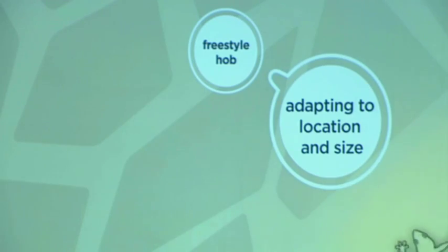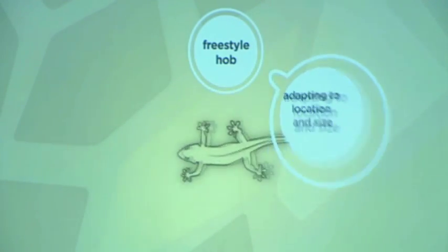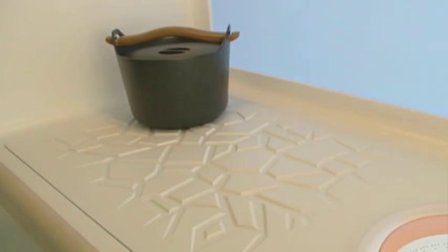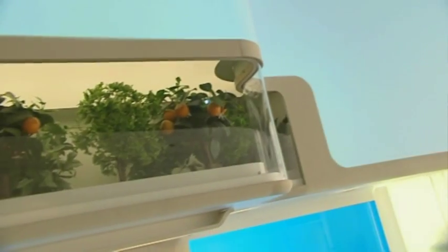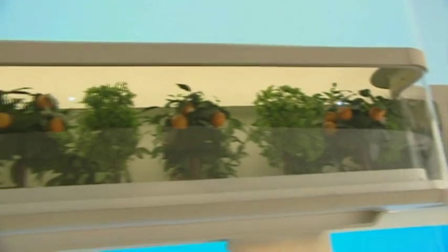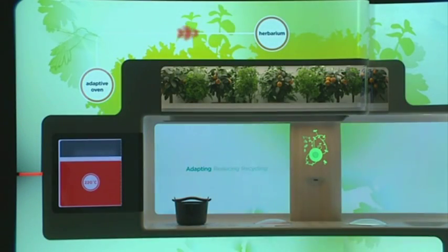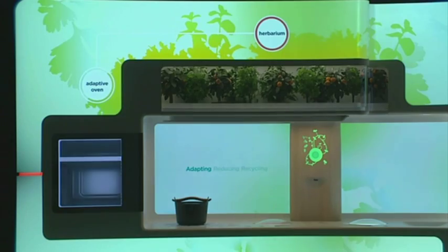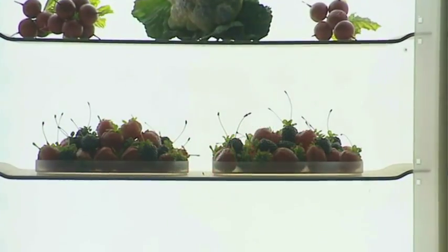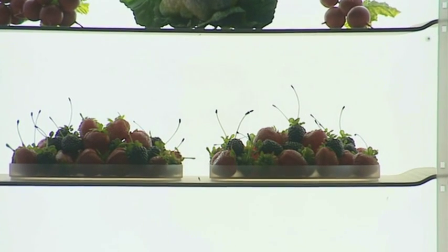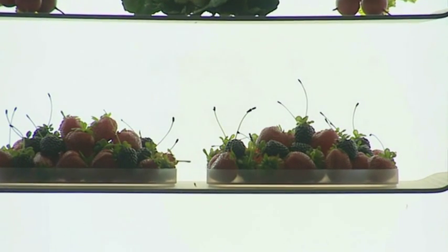The sensors of the freestyle hob provide heat only where needed. The herbarium offers perfect growing conditions in a controlled environment that combines the residual heat from the oven with humidity from the sensor hood. Just imagine having fresh strawberries all year round, grown in your own kitchen.